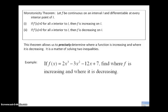Here's what I want your work to look like. Given the example f(x) = 2x³ − 3x² − 12x + 7, find where f is increasing and where it's decreasing. The first thing we're going to do — and as an AP reader I expect to see this — is find the derivative function. So: f′(x) = 6x² − 6x − 12. There's our derivative.